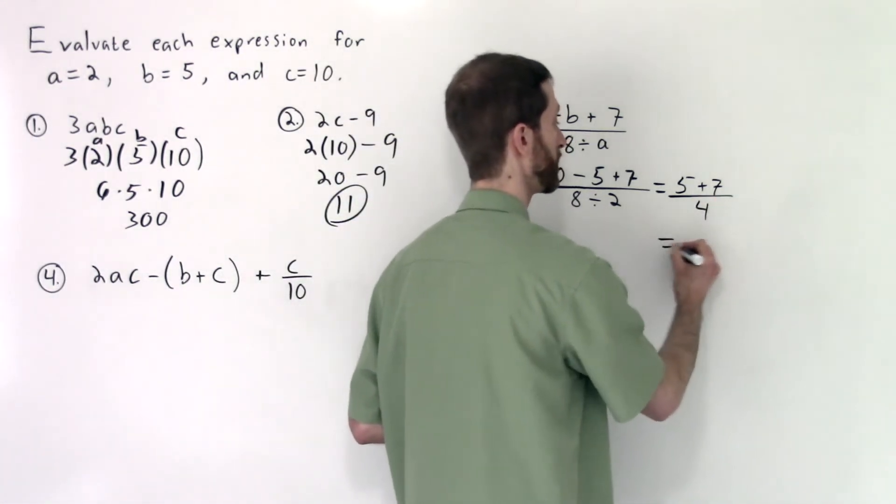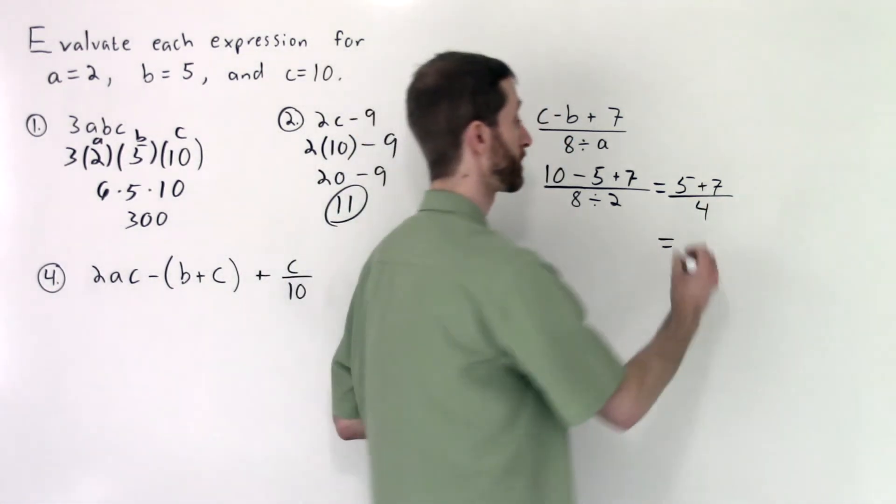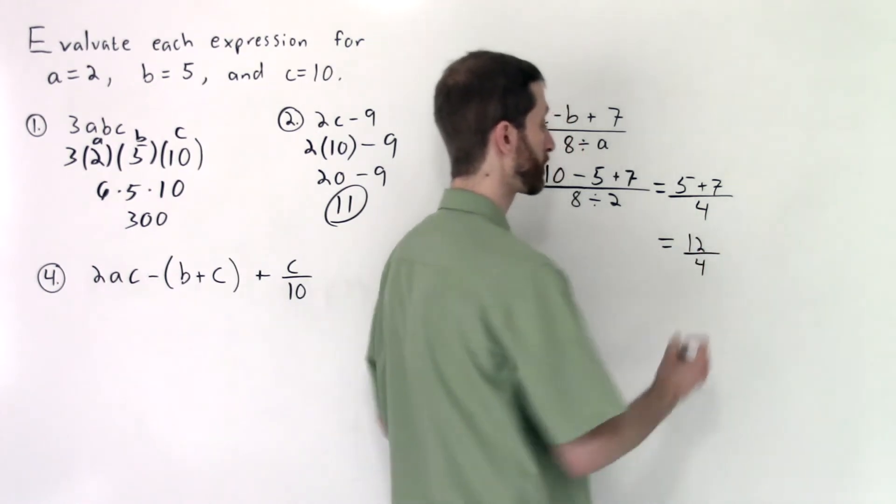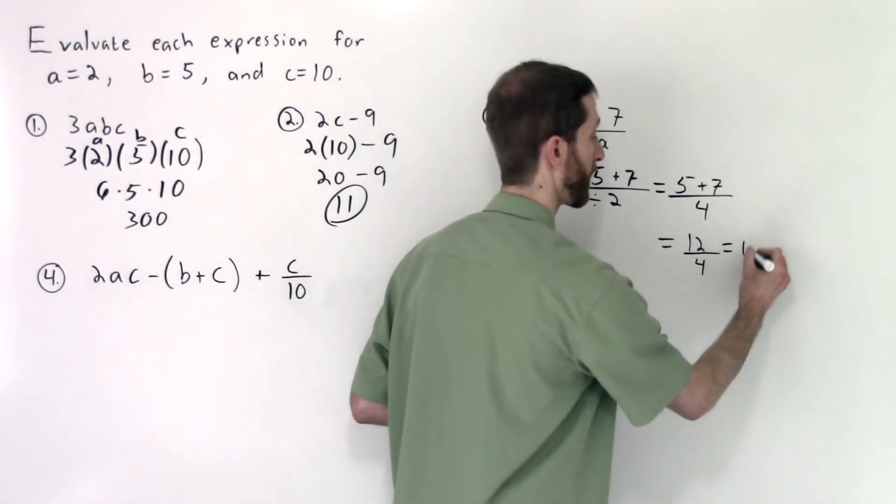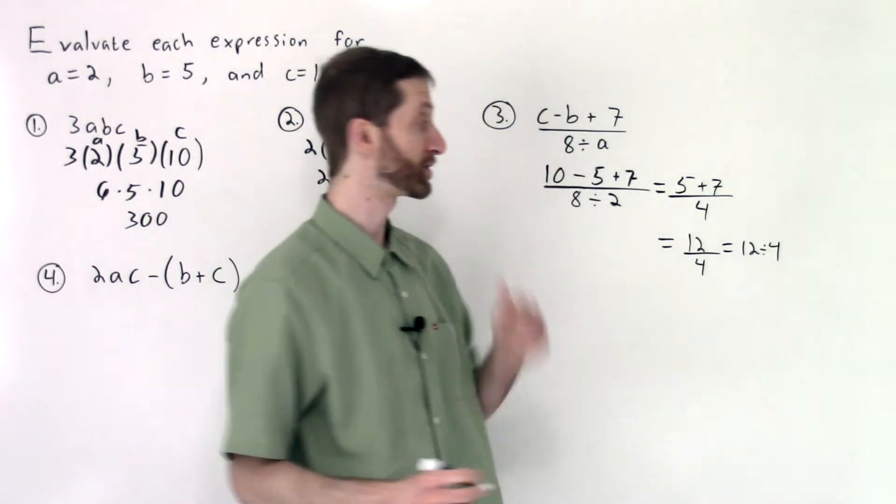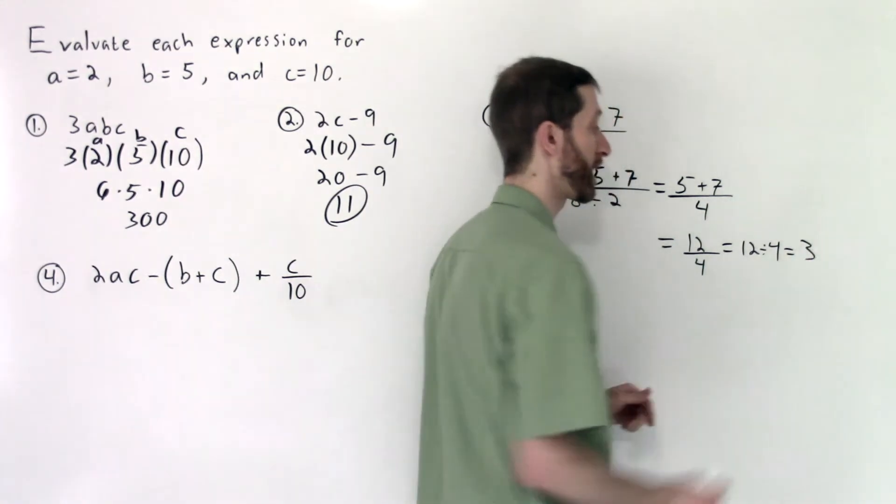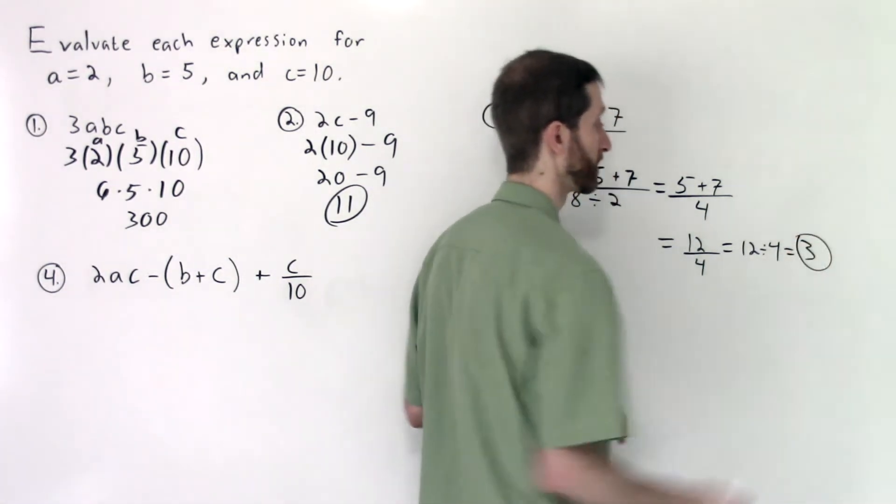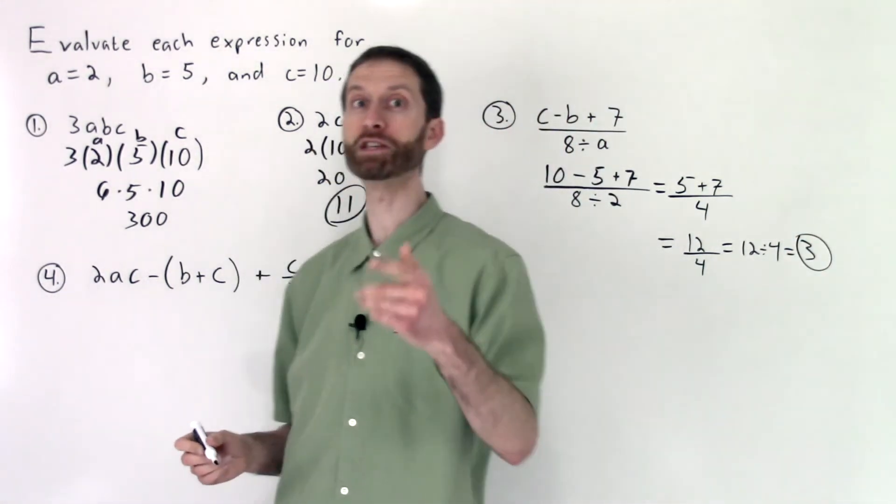All divided by 8 divided by 2 is 4. We can keep simplifying the numerator. 5 plus 7 is 12 over 4. This is the same as saying 12 divided by 4. That is equal to 3 as our answer. There you have it. Break that mess down piece by piece.